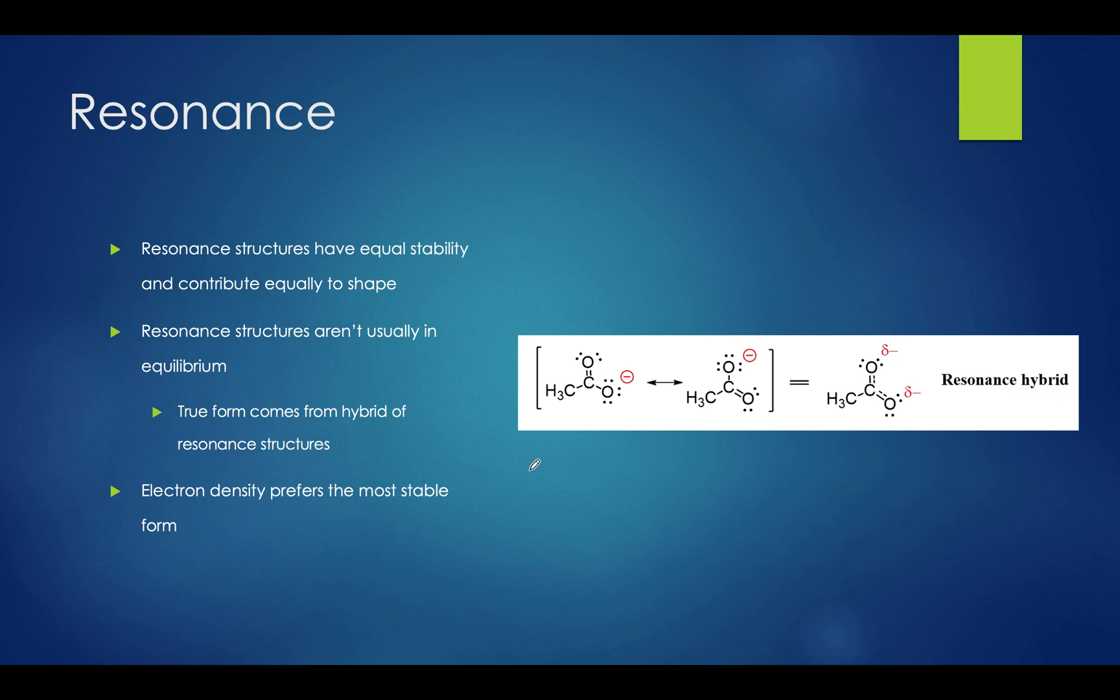Let's wrap this video up with a discussion on resonance. Resonance structures are essentially different ways you can draw a molecule by rearranging the bonds it has. Resonance structures have equal stability and can equally contribute to shape. However, these forms are usually not in equilibrium. The true form of a molecule comes from the hybrid of all of its resonance structures. You can see in this example right here that the carbonate molecule has two different resonance structures, this one and this one. Both have equal preference. Therefore, the true form of this molecule is actually a resonance hybrid of the two, where the double bonds and the negative charges are formed as two partial negative charges and two partial double bonds within the carbon. If the stability were different between the two, however, the electron density would prefer the more stable form. Some resonance structures can be favored if they lack formal charges or they fill out a full octet.